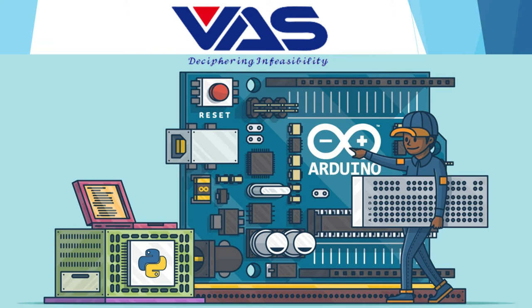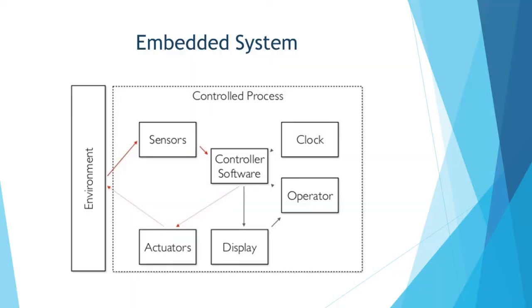Our first topic is embedded systems. An embedded system is a microprocessor — or more precisely, a microcontroller-based system of hardware and software which is designed to perform dedicated functions within a large mechanical or electrical system. As you can see in this figure, the control process consists of a sensor, controlling software, display, actuator, operator, and clock, connected to the environment.